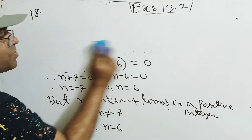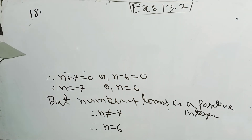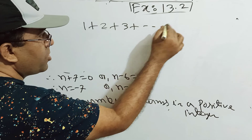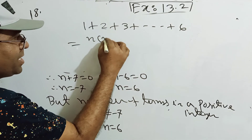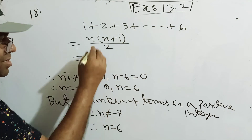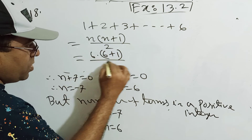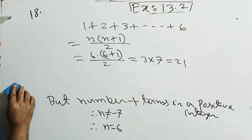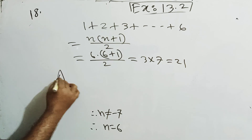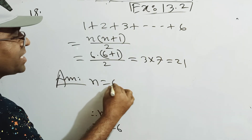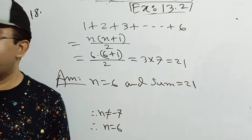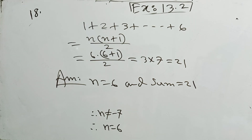Now find the sum of those N terms. Sum equals 1 plus 2 plus 3 plus ... plus 6, which equals 6 times 7 by 2, equals 21. So N equals 6 and sum equals 21.